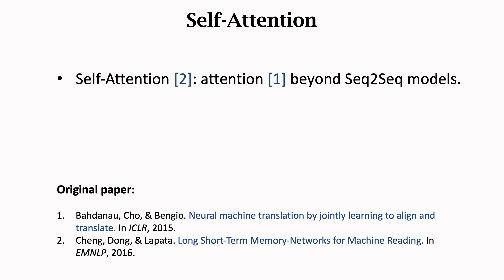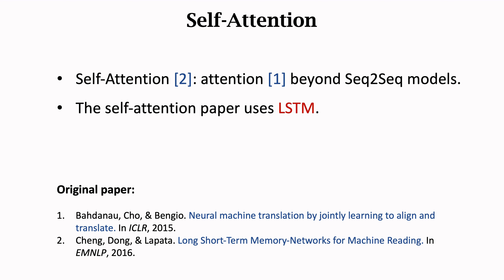Attention was originally developed for sequence-to-sequence models, but its applications are beyond sequence-to-sequence models. Attention can be combined with all kinds of RNN models. This is the original attention paper — it is applied to sequence-to-sequence models. This is the self-attention paper, published one year after attention. The self-attention paper uses LSTM with self-attention. LSTM is a kind of RNN.